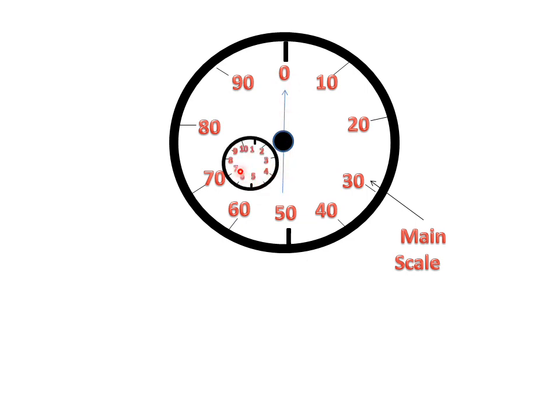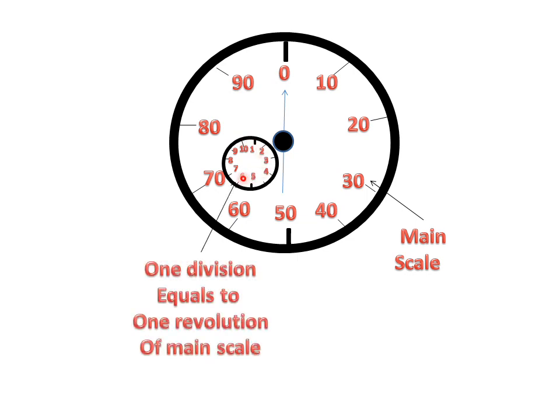This is a short dial indicator. In this, 1, 2, 3, 4, 5 readings are placed. And these readings are 1 division equal to 1 revolution of the main scale.